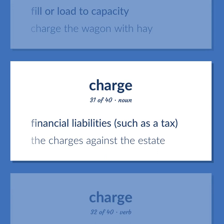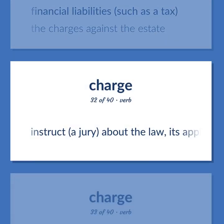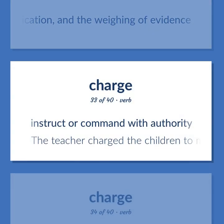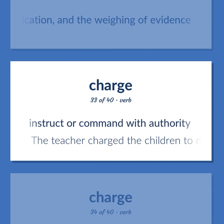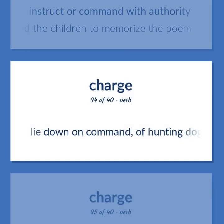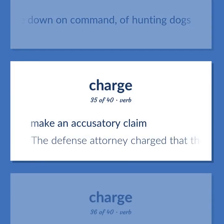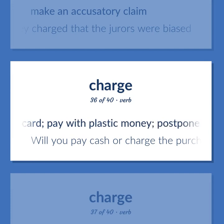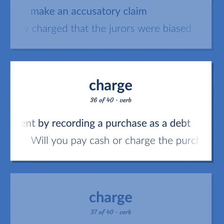Charge: financial liabilities, such as a tax. Example: the charges against the estate. Instruct a jury about the law, its application, and the weighing of evidence. Instruct or command with authority. Example: the teacher charged the children to memorize the poem. Lie down on command — of hunting dogs. Make an accusatory claim. Example: the defense attorney charged that the jurors were biased. Pay with a credit card, pay with plastic money, postpone payment by recording a purchase as a debt. Example: will you pay cash or charge the purchase?